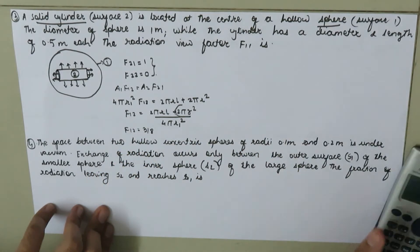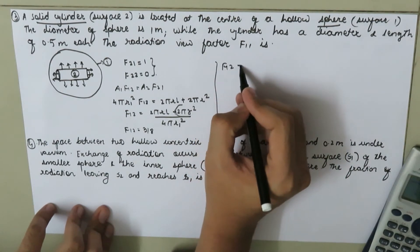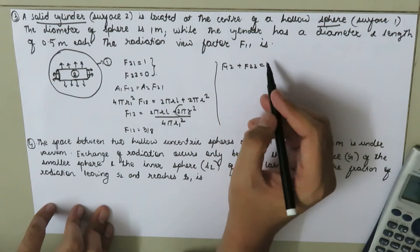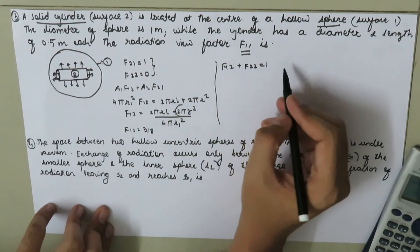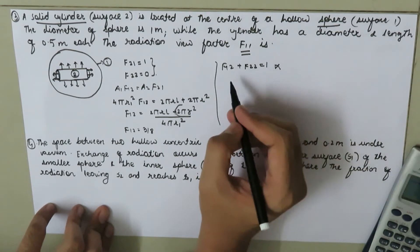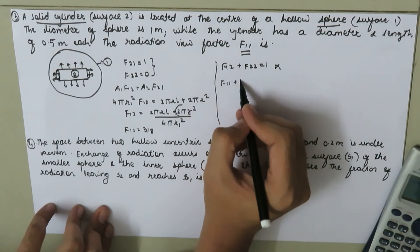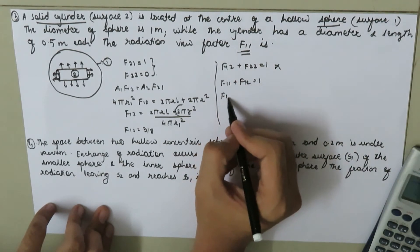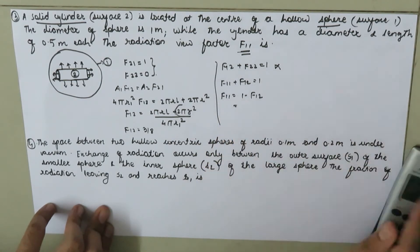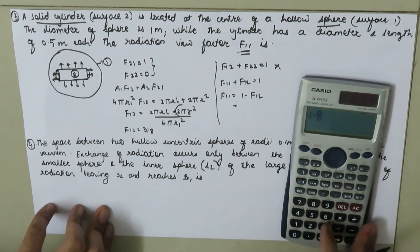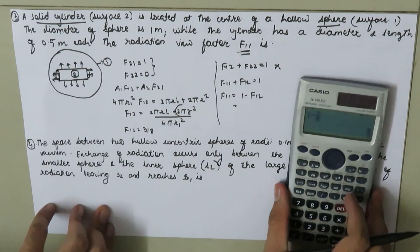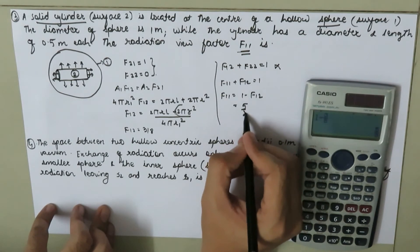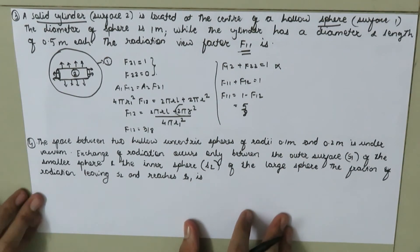By the summation rule for surface 1: F₁₁ + F₁₂ = 1. We need to find F₁₁, so F₁₁ = 1 − F₁₂ = 1 − 3/8 = 5/8.